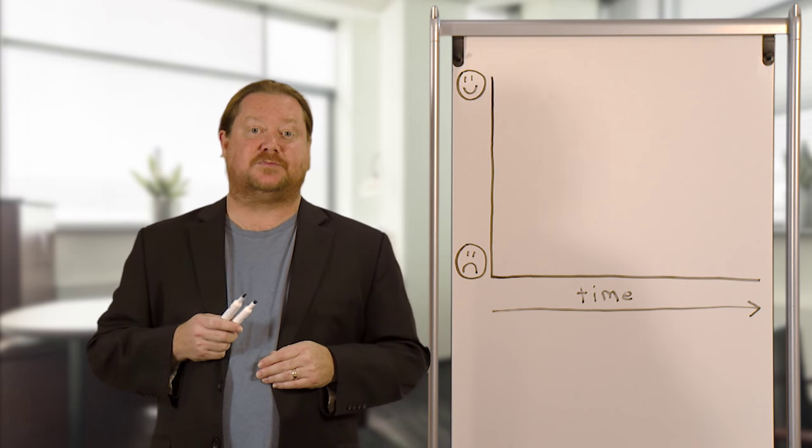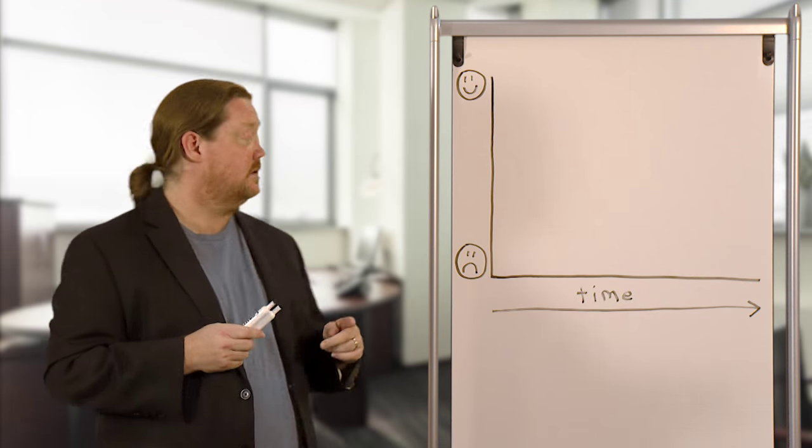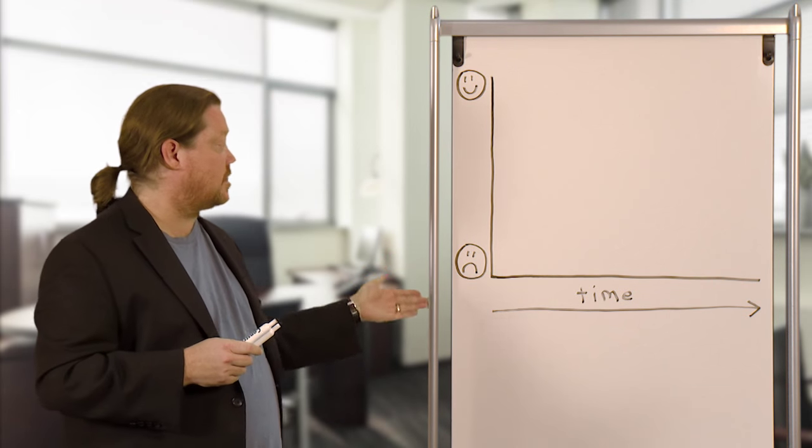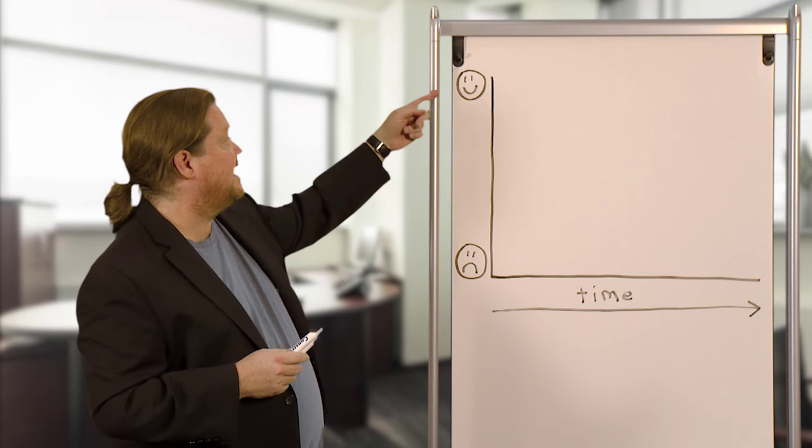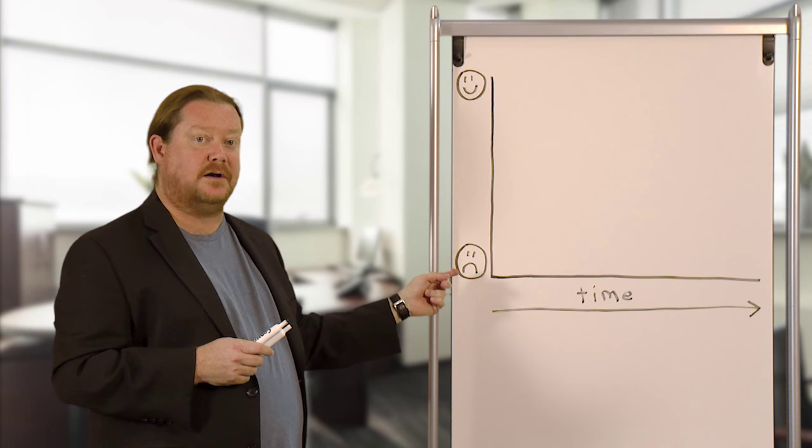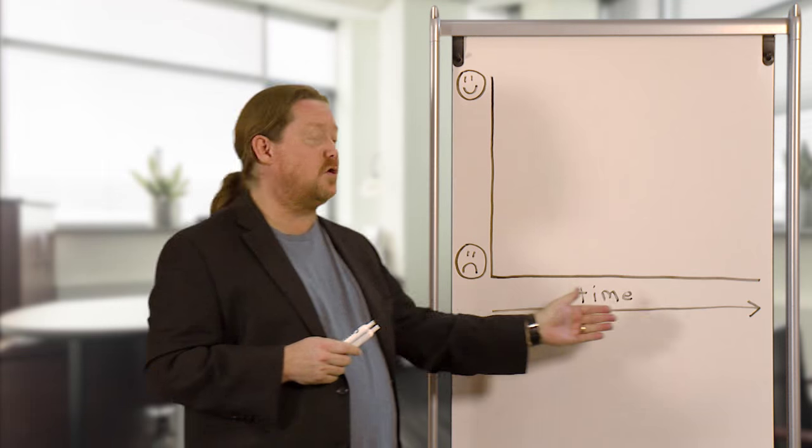In your retrospective, the facilitator, the Scrum Master, draws a chart, a graph, up on the wall on a whiteboard. Happiness at the top, unhappiness at the bottom, progressing through time over the course of the sprint.